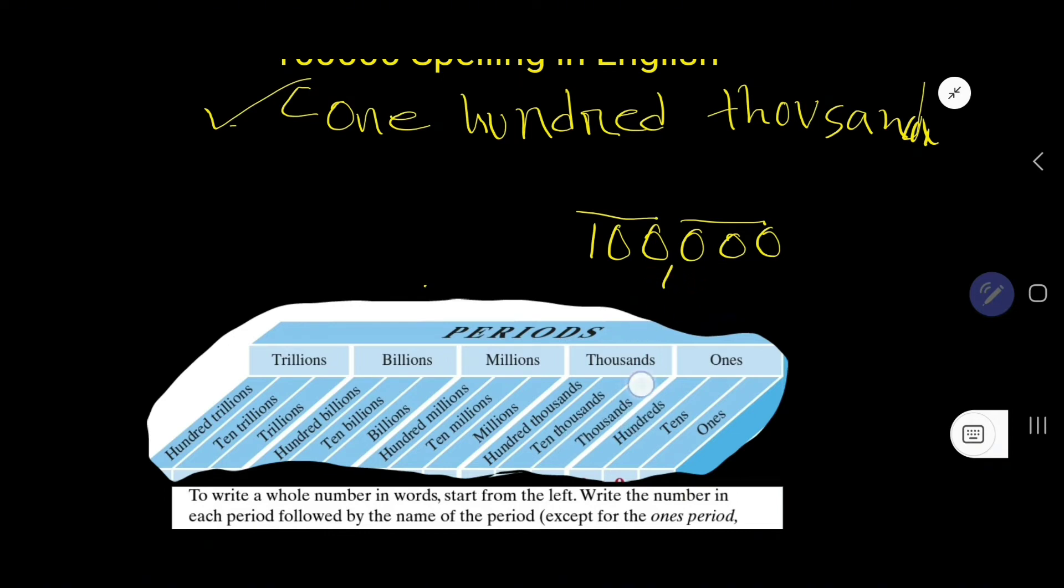This is in thousands, this zero is in thousands, this zero is in ten thousands, and this one is in hundred thousands.